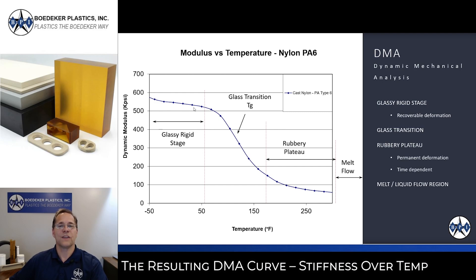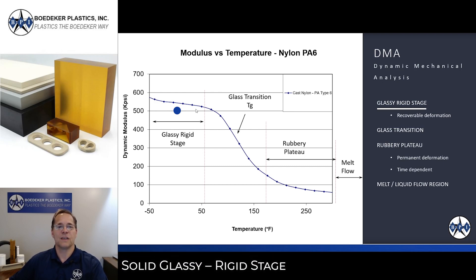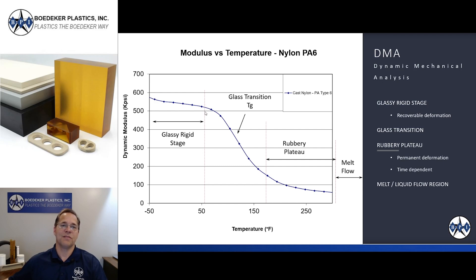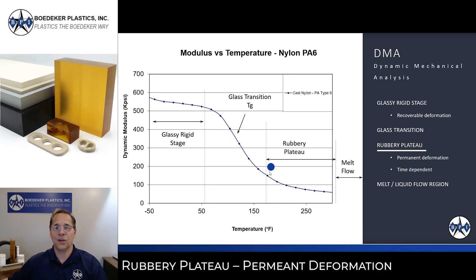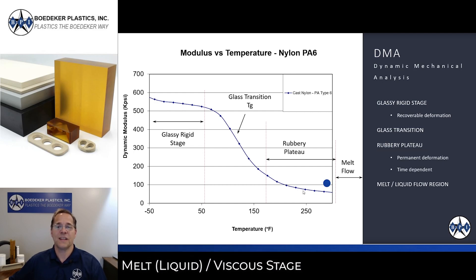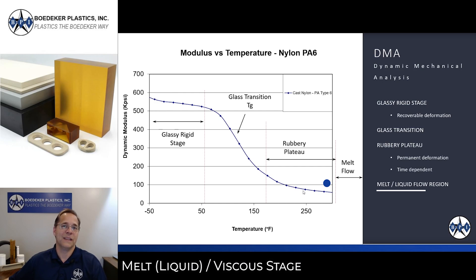You can boil all this raw data down into a simple DMA curve showing overall stiffness with temperature. As the material starts to get soft and rubbery, you go from the room-temperature glassy, solid, rigid stage and enter the glass transition where the polymer starts to move, causing softening until you hit the rubbery plateau. At the rubbery plateau you enter the area of permanent deformation, which is also time-dependent — not just associated with temperature, but temperature and time under load.